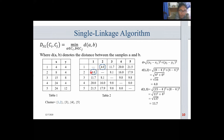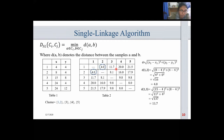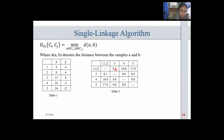So clusters 1 and 2 are merged. At that point there are 4 clusters: {1,2}, {3}, {4}, and {5}. From Table 2, we get distance 8.1 between {1,2} and 3, distance 16.0 as the minimum between {1,4} and {2,4}, and 17.9 as the minimum distance between {1,5} and {2,5}. In this table, 8 is the minimum value, so samples 4 and 5 are merged.